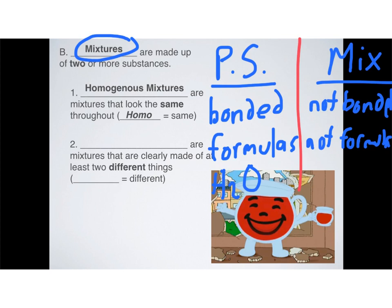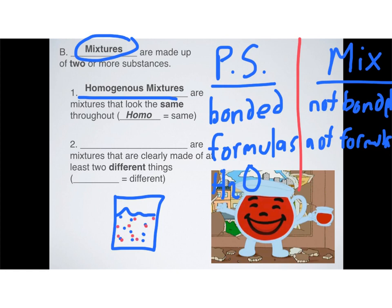There are two types of mixtures. The first is called a homogeneous mixture. The word homogeneous means it looks like it's the same throughout. For example, a cup of milk looks like it's just white liquid, but in reality there are hundreds of different things floating around inside it — they're not bonded to each other, and there's no formula for milk. Mixtures that appear as though they're made up of one thing, even though they're not, are called homogeneous mixtures.